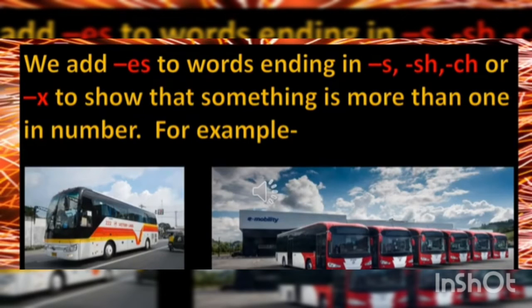We add 'es' towards the ending of words ending in s, sh, ch, or x, to show that something is more than one in number.